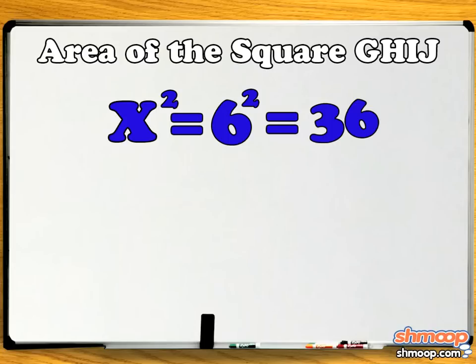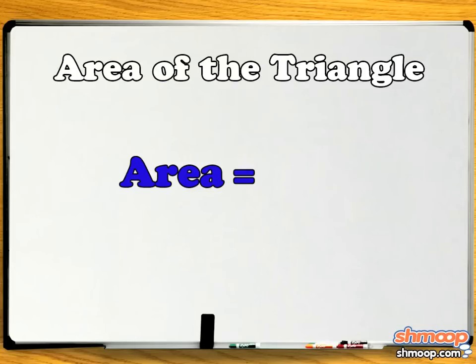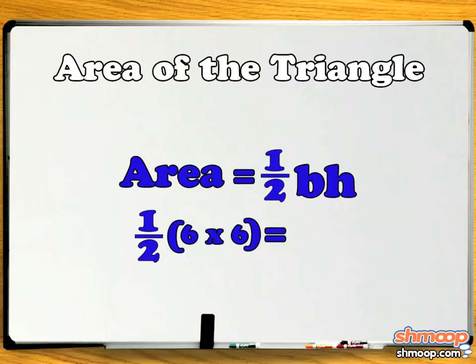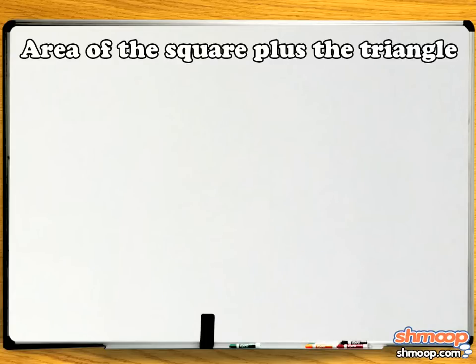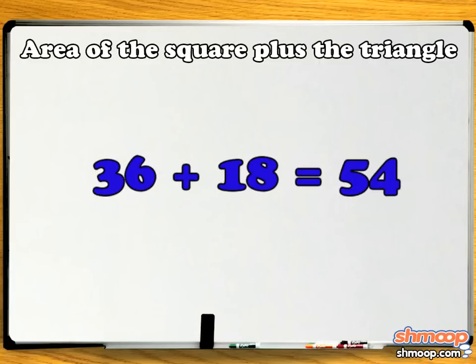Now we can use the area formula for a triangle. Area equals one-half base times height. Plugging in our numbers, we get one-half 6 times 6 equals 18. So now we need to add up the area of the triangle and the area of the square, which gives us 36 plus 18, which equals 54 square millimeters.